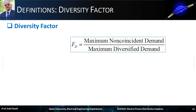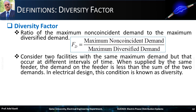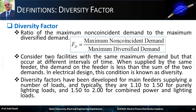Next, we will define the diversity factor. It is the ratio of the maximum non-coincident demand to the maximum diversified demand. For instance, consider two facilities with the same maximum demand but occurring at different intervals of time. When supplied by the same feeder, the demand on the feeder is less than the sum of the two demands — in electrical design, this condition is known as diversity. Diversity factors for main feeders are typically 1.1 to 1.5 for purely lighting loads, and 1.5 to 2 for combined power and lighting loads.